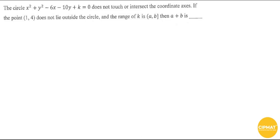We have this question: the circle x² + y² - 6x - 10y + k = 0 does not touch or intersect the coordinate axes. If the point (1, 4) does not lie outside the circle, what is the range of k? The range of k is the open interval (a, b] — then what is a plus b? This is a question from circles in coordinate geometry.